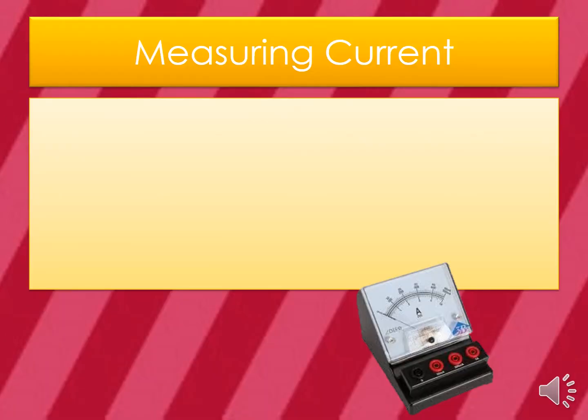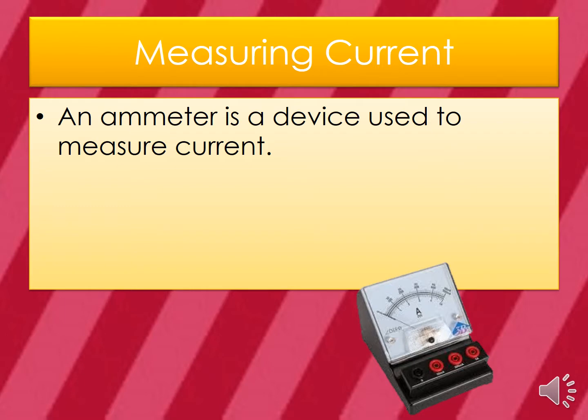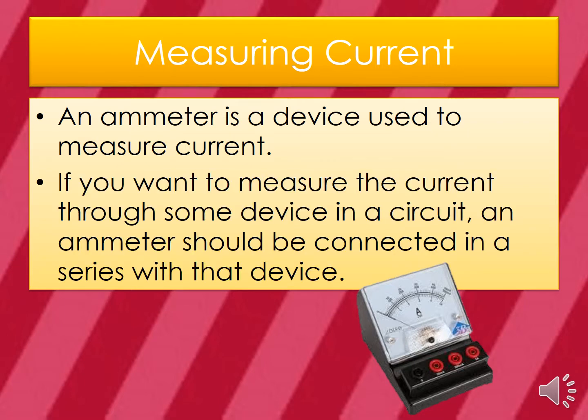How do we measure current? An ammeter is a device used to measure current. If you want to measure the current through some device in a circuit, the ammeter should be connected in series with that device.